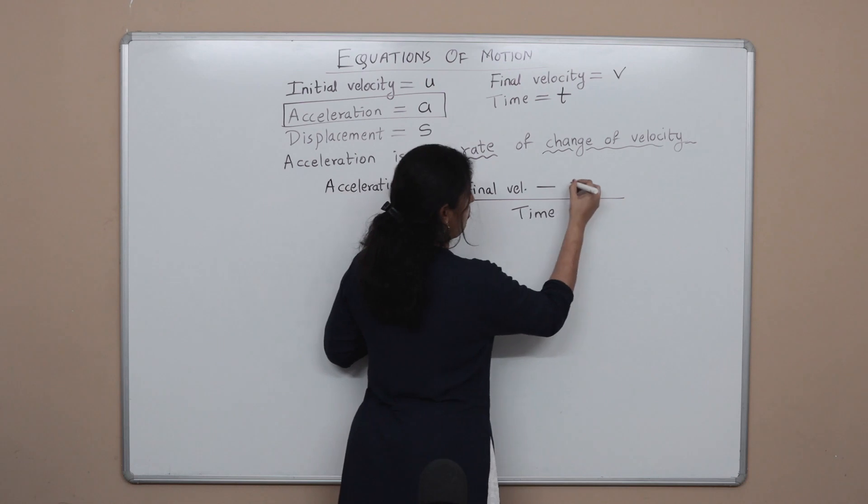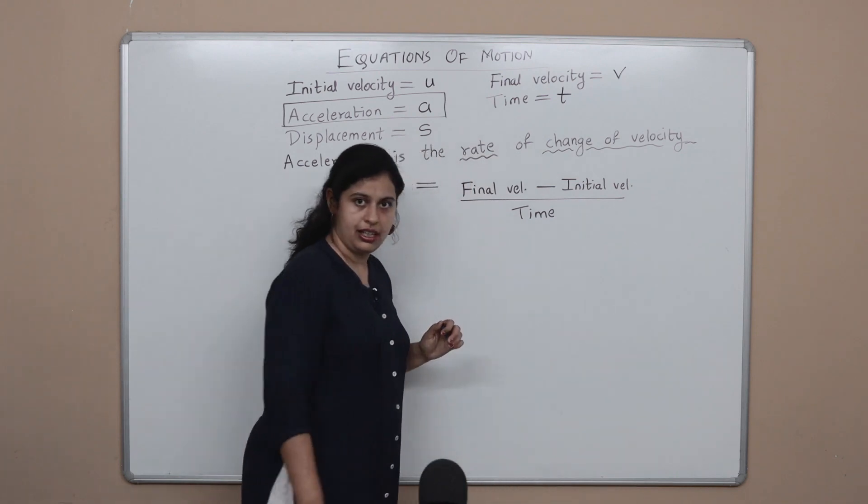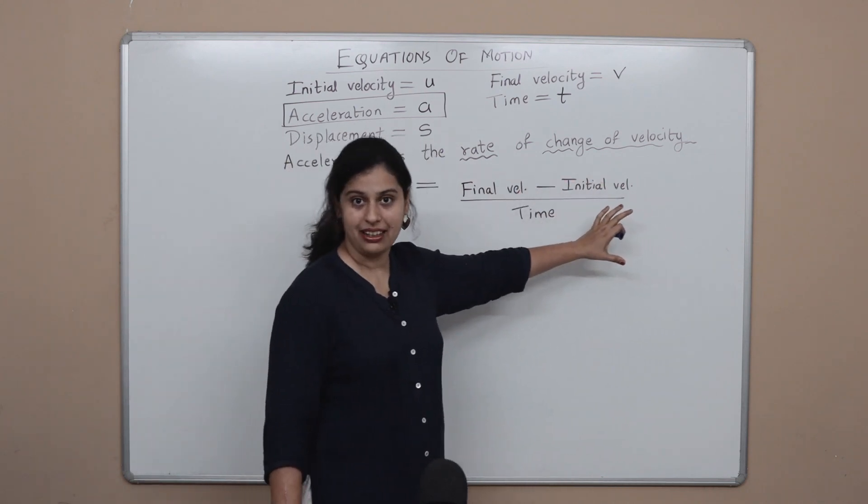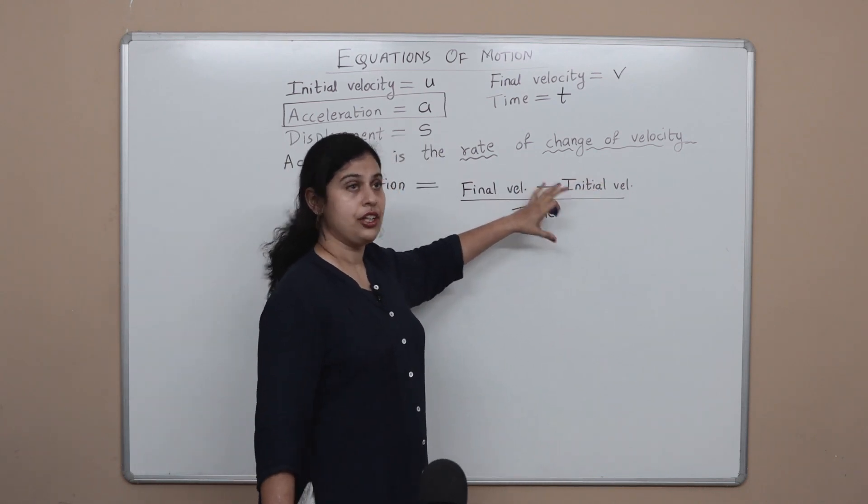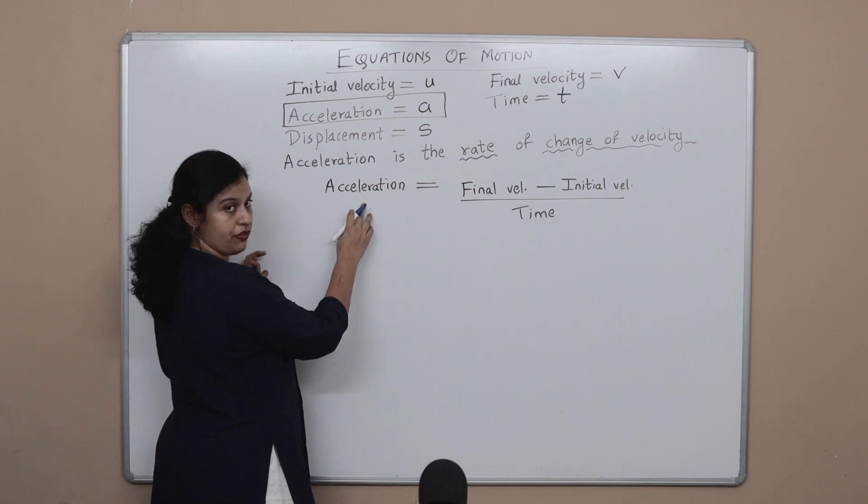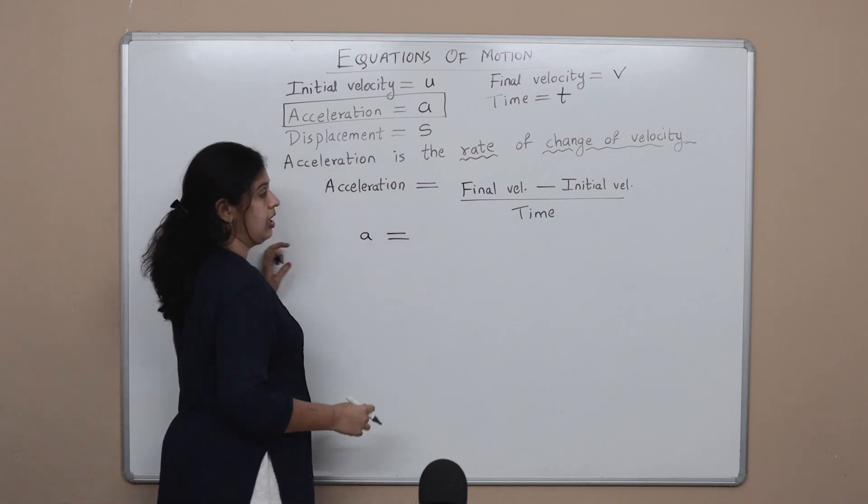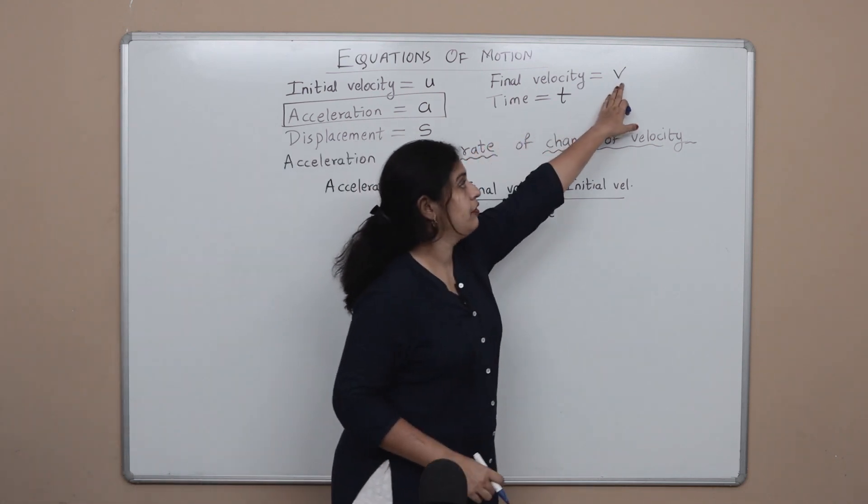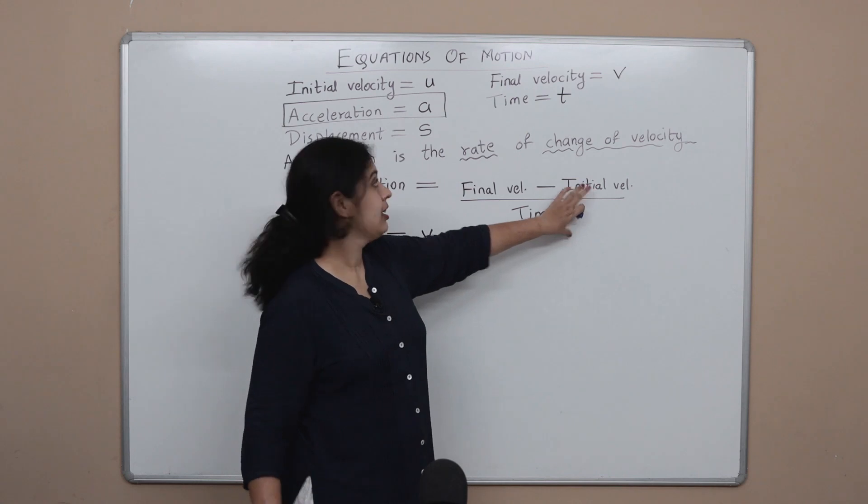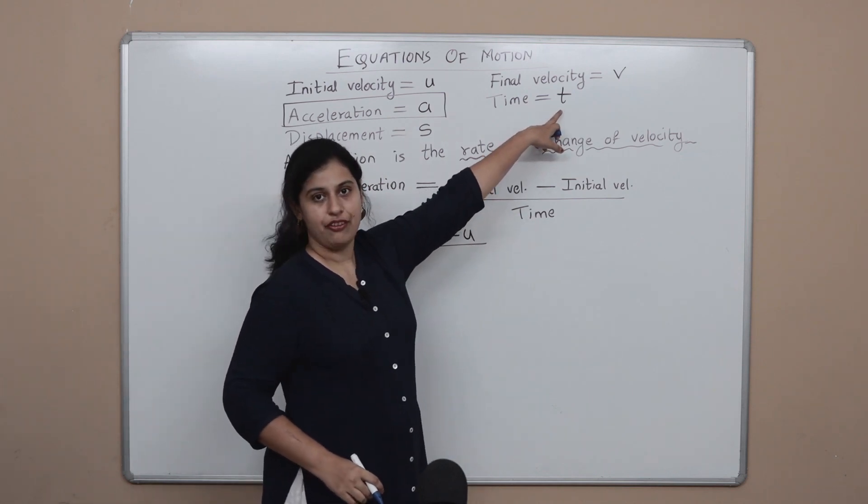But as I said sometime back, it would be really a big headache to write each and every term like this, right? So let's make it simpler. Let's substitute the variables that we have in their respective places. What goes in place of acceleration? a, equal to remains as it is. How do we write final velocity? With the letter v. Minus, how do we write initial velocity? With the letter u. And what is used to denote time? The alphabet t.